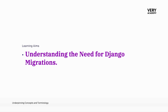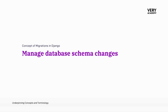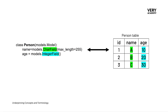Let's start by understanding the need for Django migrations. In Django, migrations are a key functionality used to manage database schema changes. Simply put, migrations help us synchronise changes to our models. Here we have a person model on the left-hand side, and it allows us to reflect those changes to the underlying database used in our project.